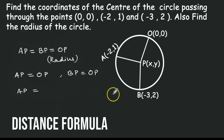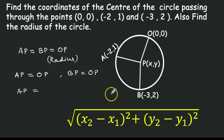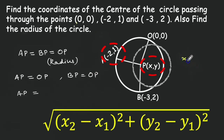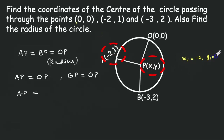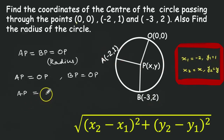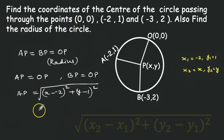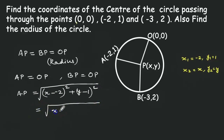Now let us find the length of AP using the distance formula. The distance formula is: root of (x2 minus x1) squared plus (y2 minus y1) squared. Here x1 and y1 are (-2, 1) and x2, y2 are (x, y). So x1 equals -2, y1 equals 1, x2 equals x, y2 equals y. Substituting these values, AP equals root of (x minus (-2)) squared plus (y minus 1) squared, which is root of (x plus 2) squared plus (y minus 1) squared.